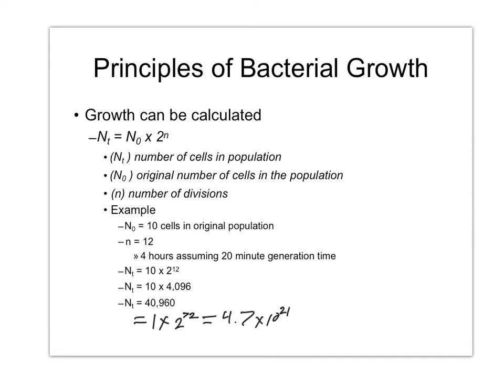Whereas something like Streptococcus pneumoniae, if it gets into your cerebrospinal fluid, can reproduce quite quickly.